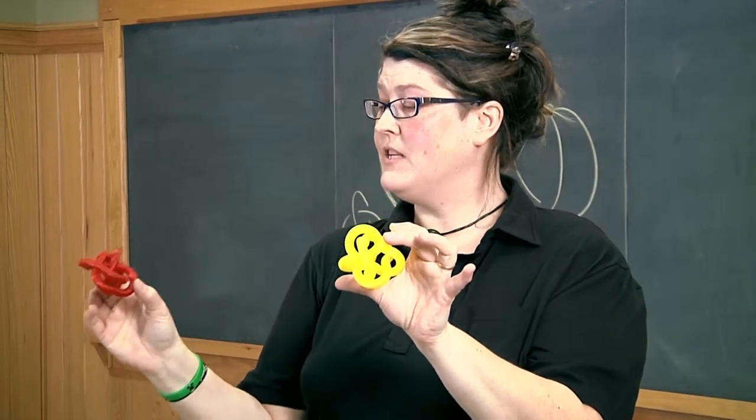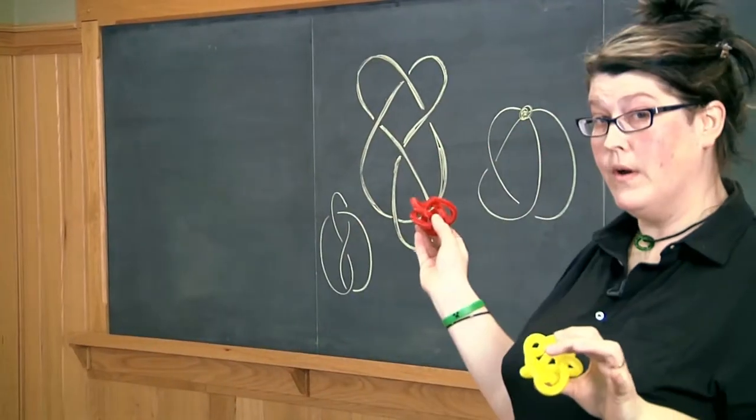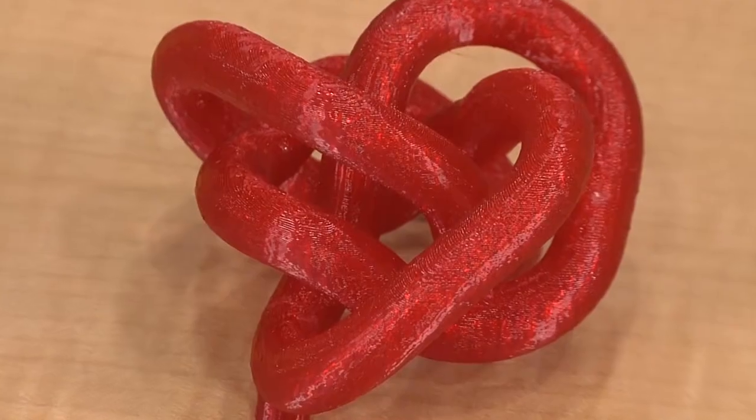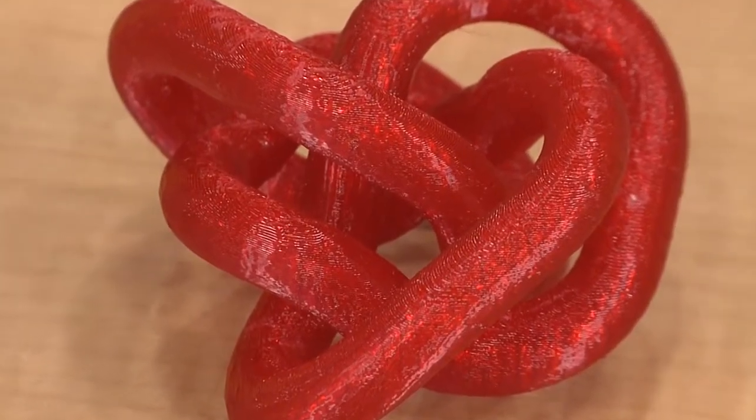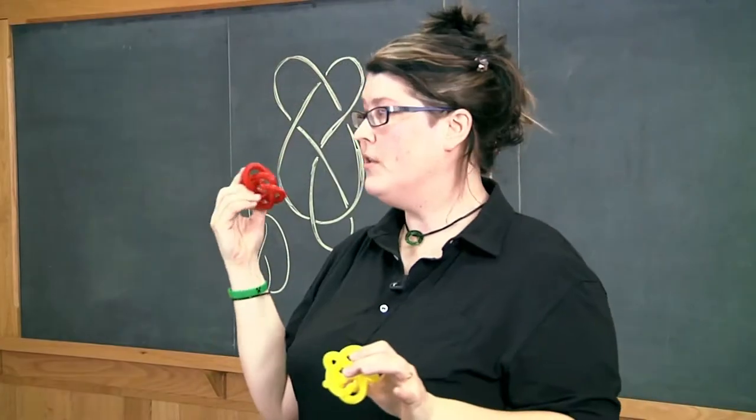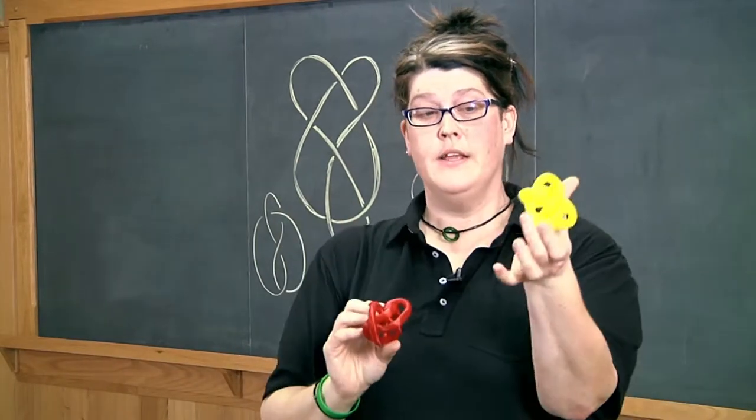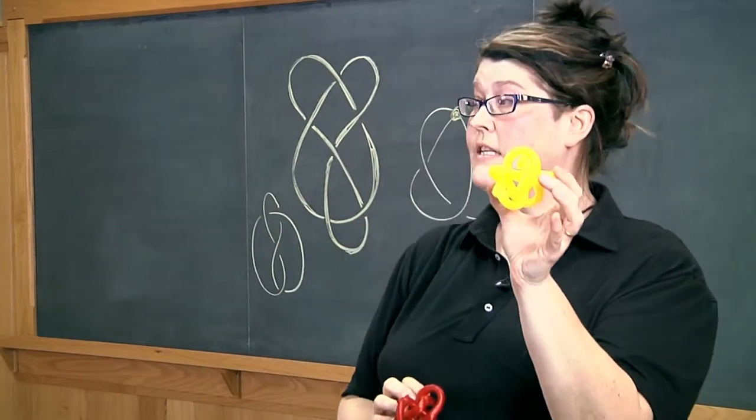And this red knot has a very special property. Its property is this: no matter how I draw it on the board, I will never ever be able to draw it so that the strands go over, under, over, under, over, under, like they do in all the pictures on the board here. You can't do it. You can draw it on the board, but it wouldn't be alternating. This is the first non-alternating knot. This is the knot right before it in the table. It is alternating.